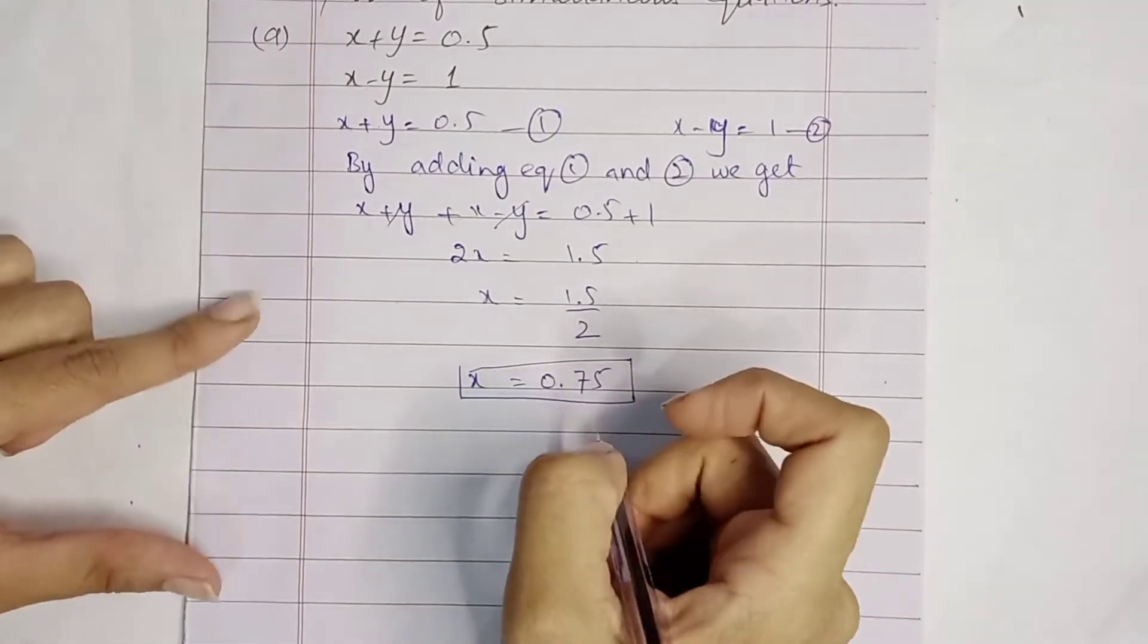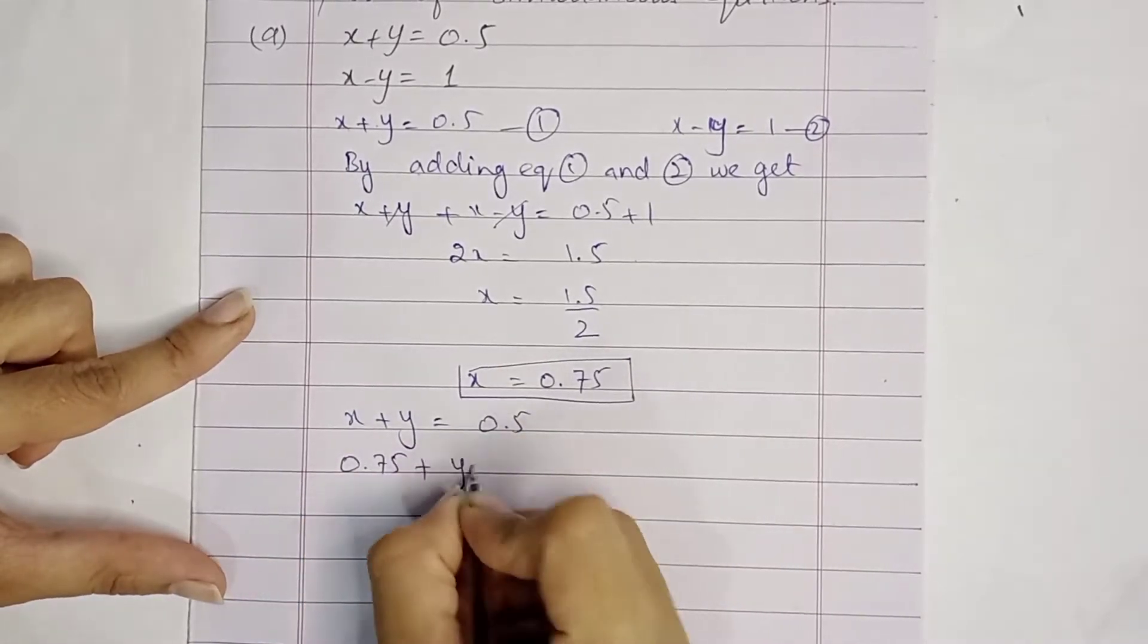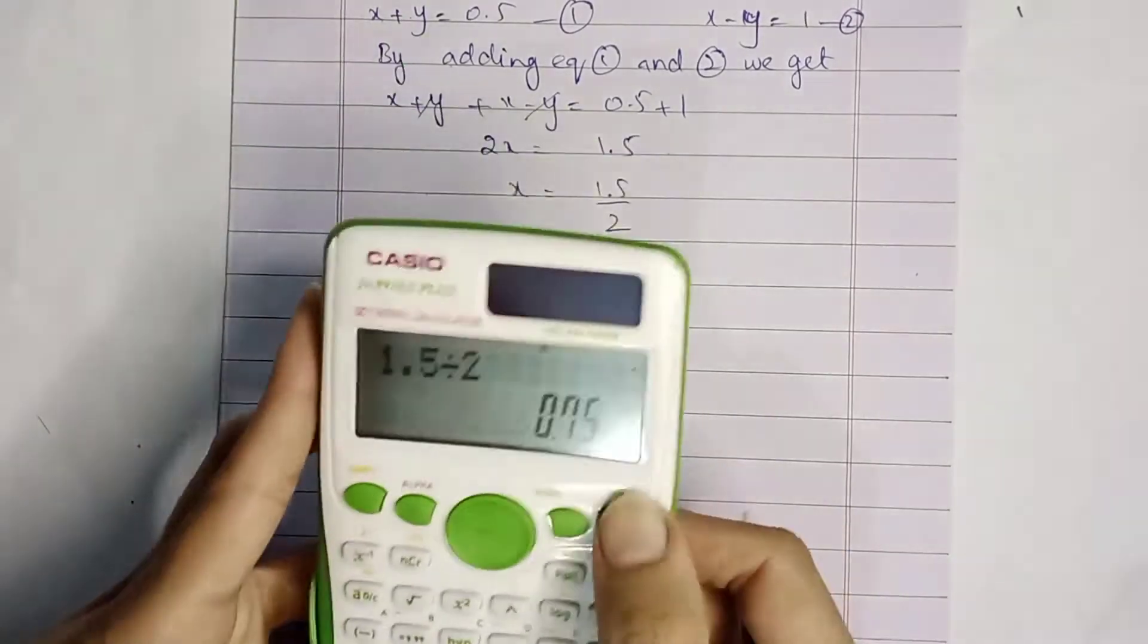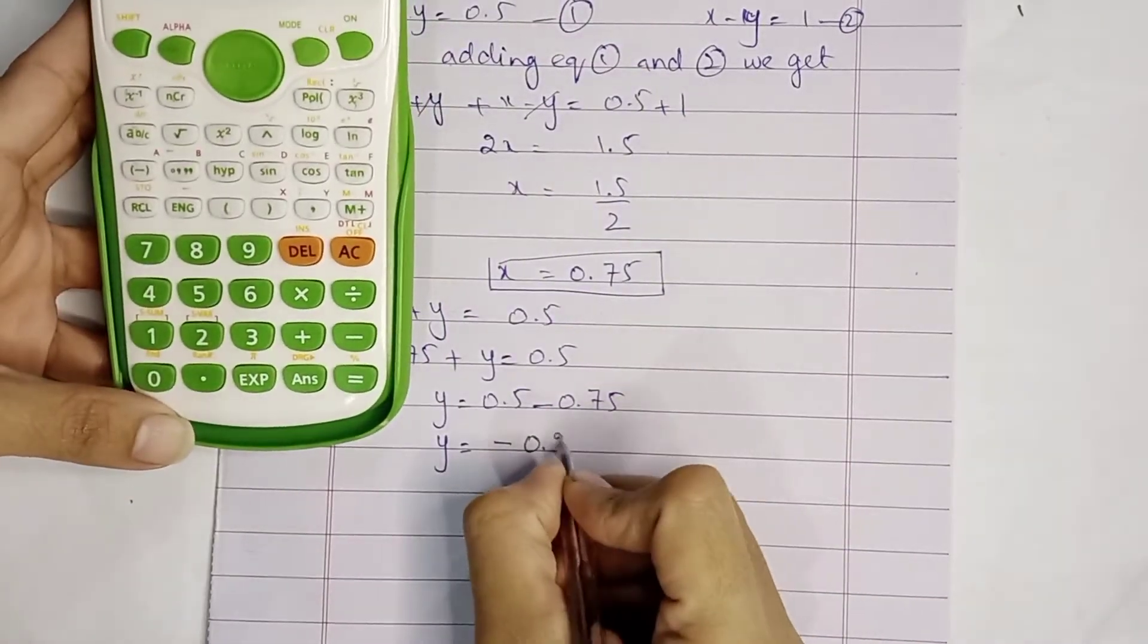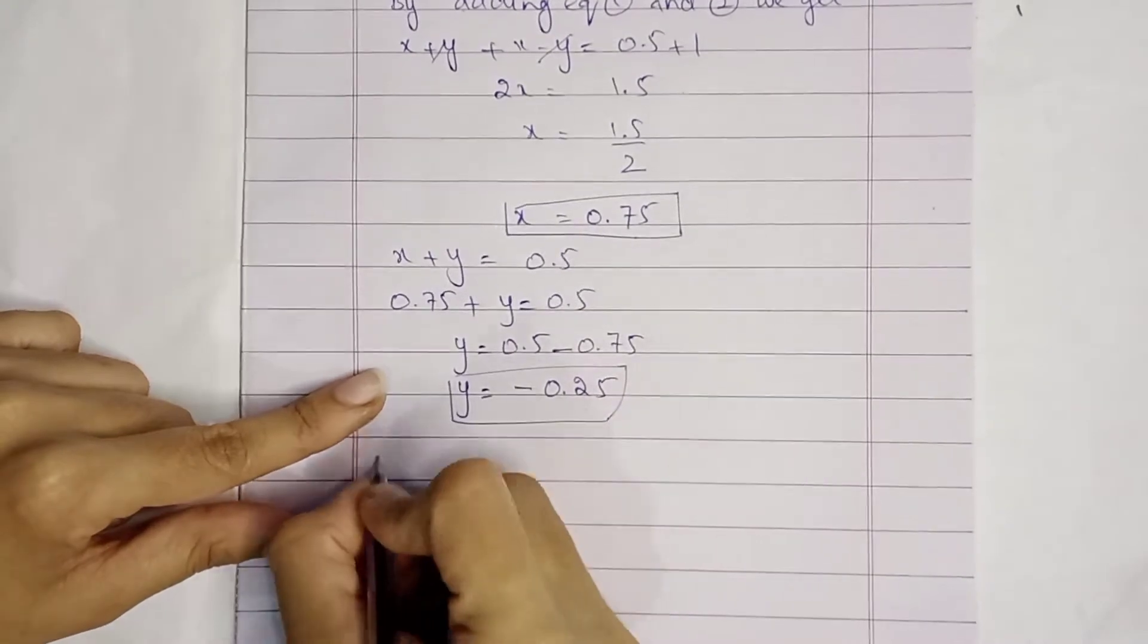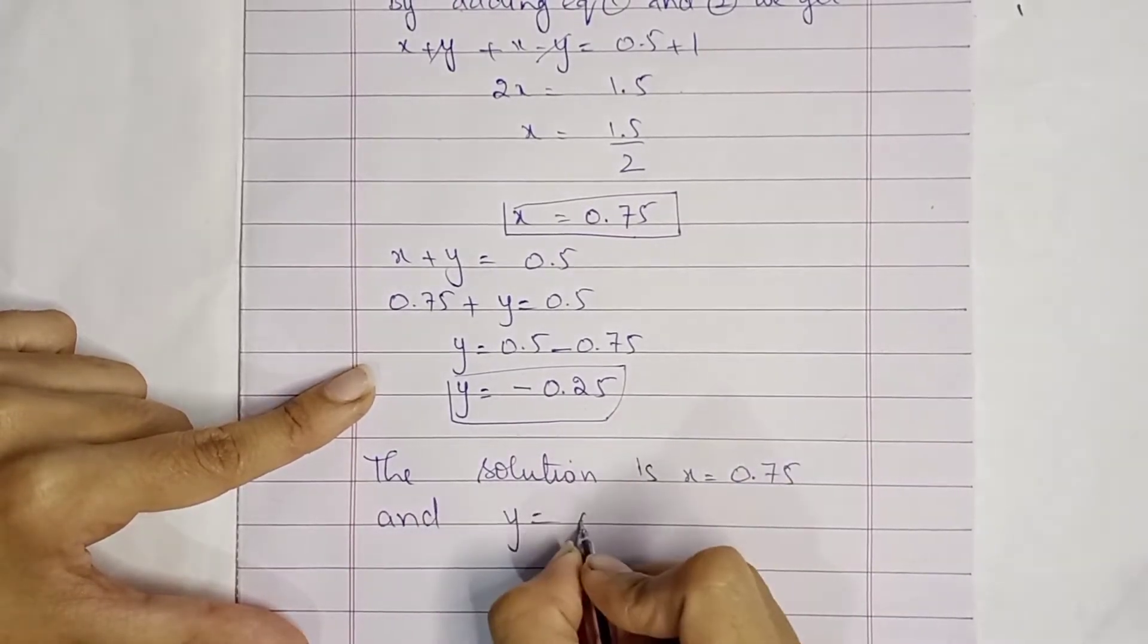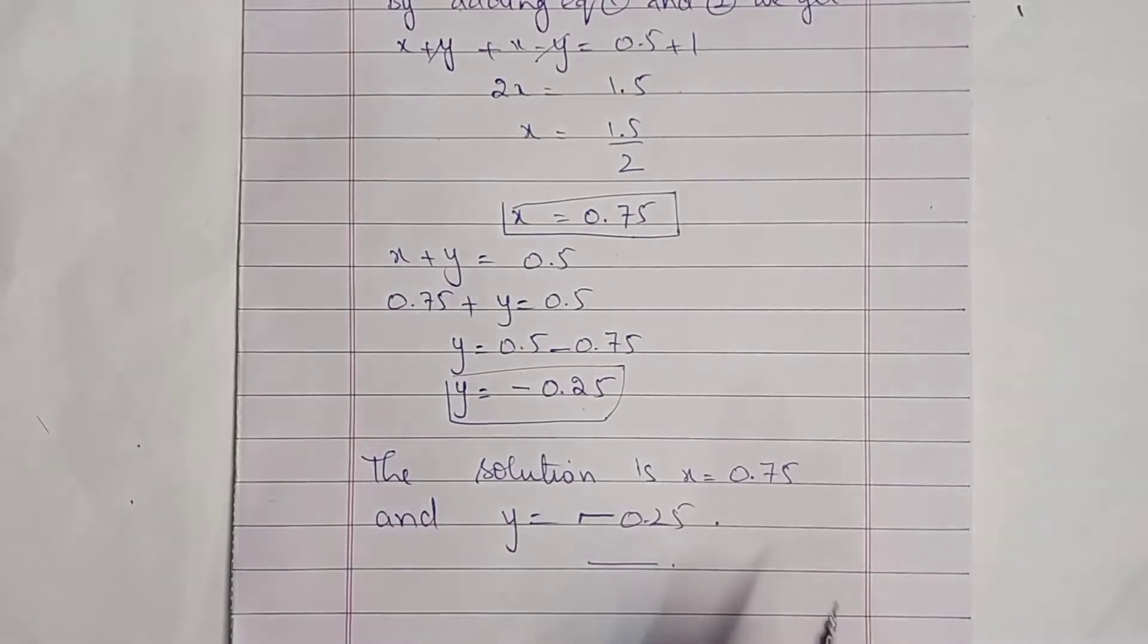We put this value in equation number 1. x plus y equals 0.5, so 0.75 plus y equals 0.5. y is equal to 0.5 minus 0.75, which equals negative 0.25. Now part A is solved, students.